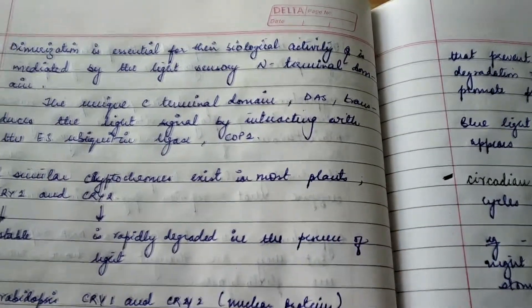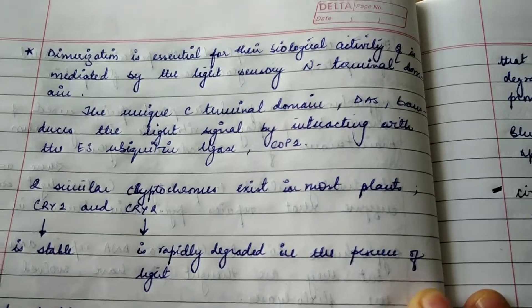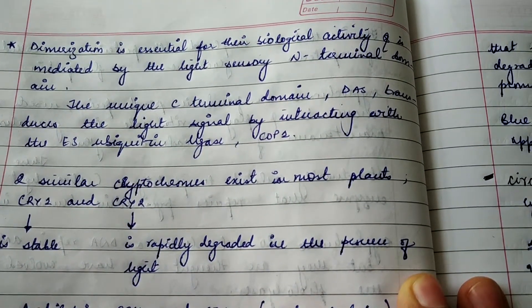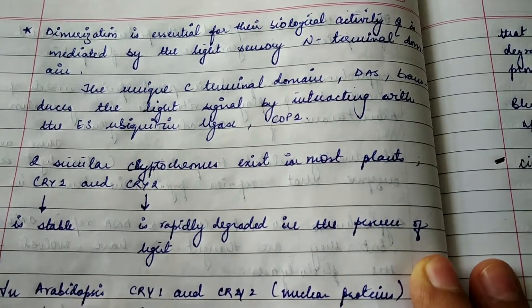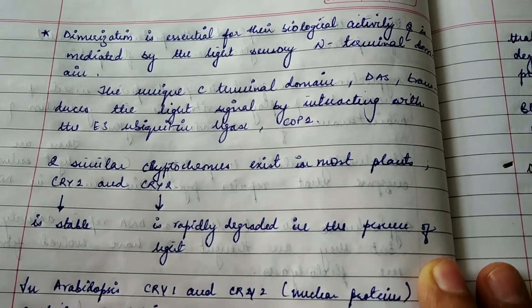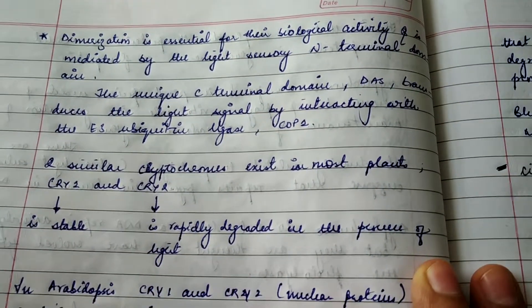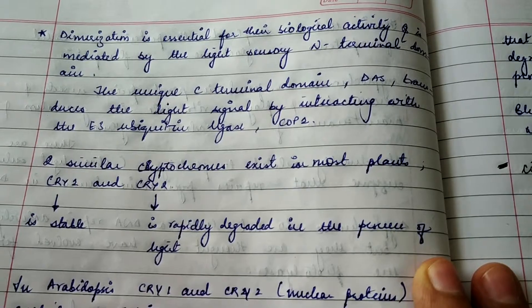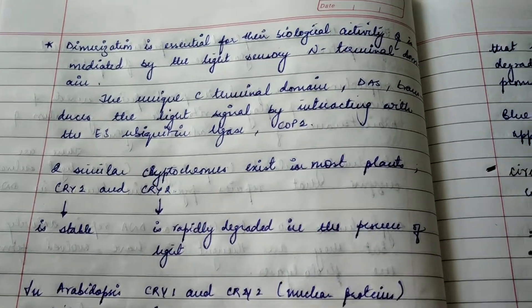Dimerization is essential for the biological activity of cryptochromes, and it is mediated by the light-sensory N-terminal domain. Dimerization is very important for all their biological activity.